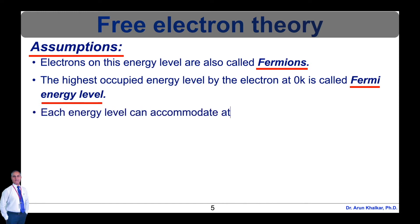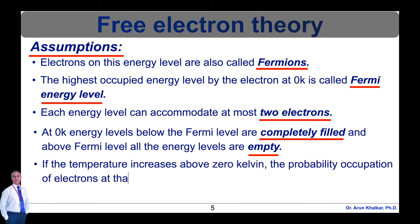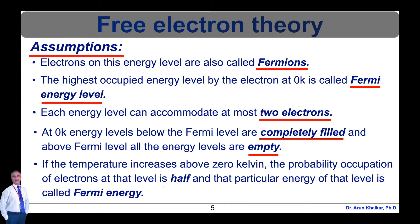This highest occupied energy level by the electron at 0 Kelvin is called Fermi energy level. At 0 Kelvin, energy levels below the Fermi level are completely filled and above Fermi level all energy levels are empty. If the temperature increases above 0 Kelvin, the probability occupation of electrons at that level is half. That particular energy of that level is called Fermi energy. The value of Fermi energy in metal is above 5 electron volts.